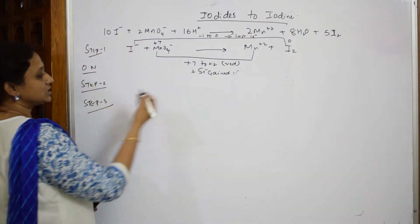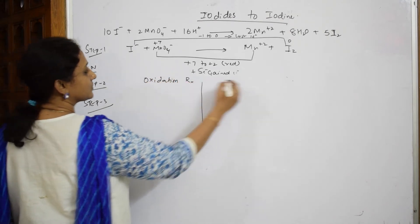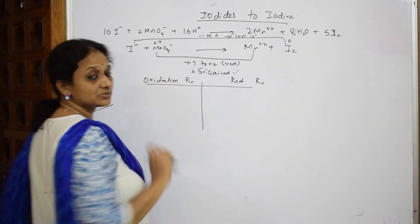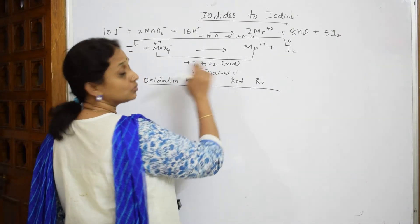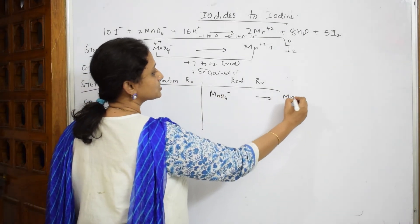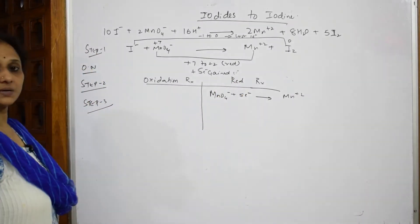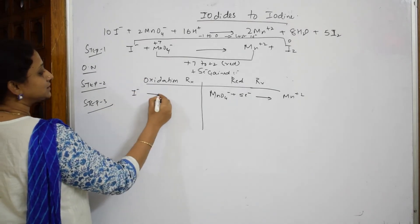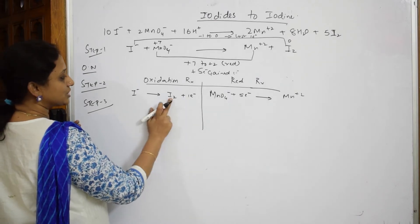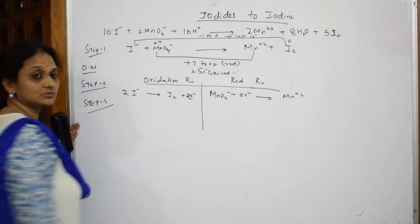In Step 3, write the oxidation half-cell reaction and the reduction half-cell reaction. Manganese always undergoes reduction from a higher to lower oxidation state: MnO₄⁻ gains 5 electrons to form Mn²⁺. For iodide, I⁻ loses one electron, but after balancing iodine atoms to I₂ (two iodines), the oxidation half-reaction shows 2I⁻ losing 2 electrons.